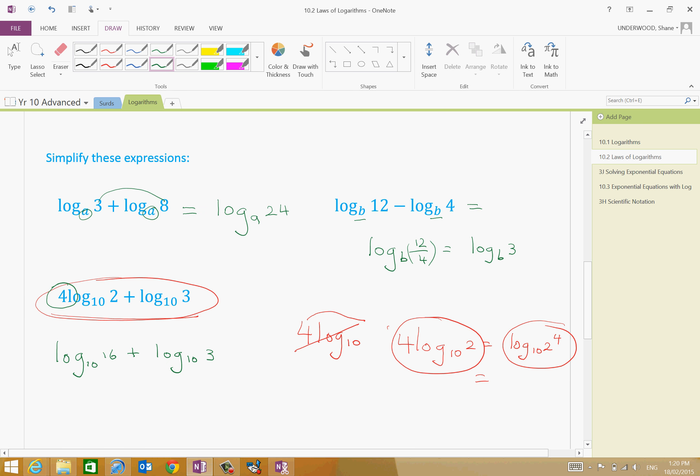2 to the power of 4 is 16 plus log to the base 10 of 3. Now, what we can do now is because they're the same base and we don't have any constant out the front, we can say that log to the base 10 of 16 times 3 is 48. And that is our simplified answer.